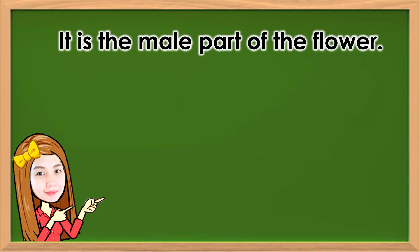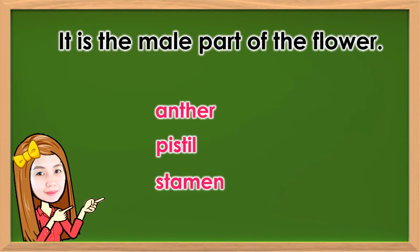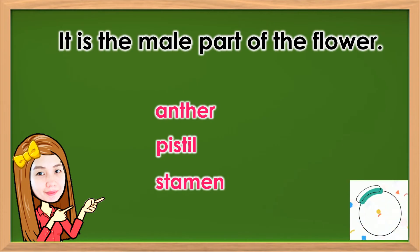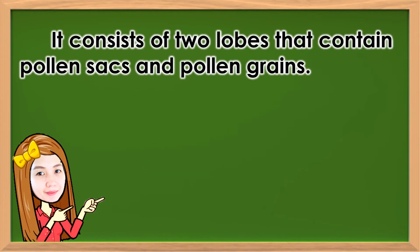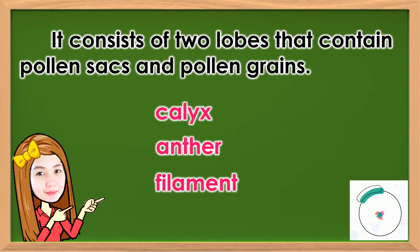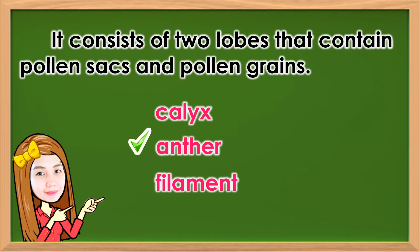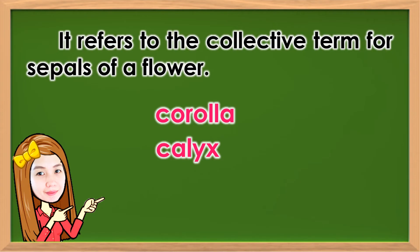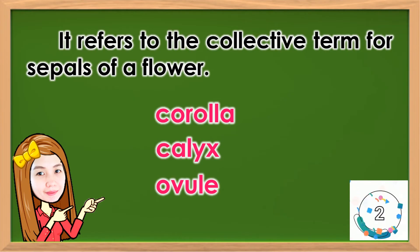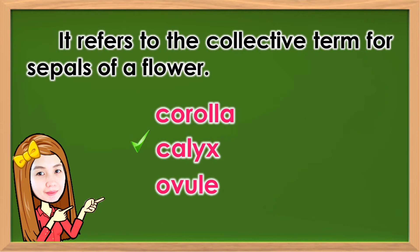It is the male part of the flower. The answer is stamen. It consists of two lobes that contain pollen sacs and pollen grains. The answer is anther. It refers to the collective term for sepals of a flower. The answer is calyx.